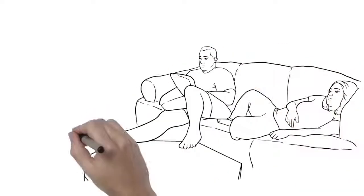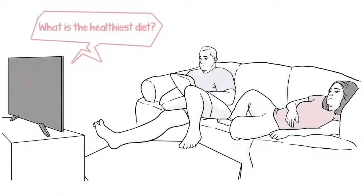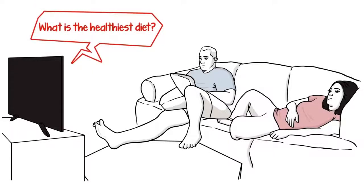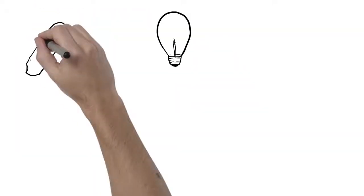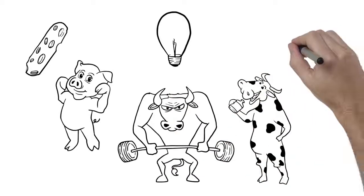Bob and Sally are confused. They want to eat healthy, but there's so much confusing information out there. Which diet is really the best one?